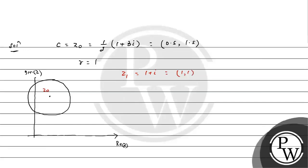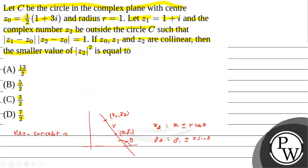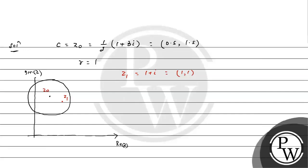And it is said that there is a third point z2 which is outside the circle. z1 and z2, all three are collinear, meaning they lie on a line. So z2 can either be here or here; both cases are possible. We have to think about both cases. If they are collinear, then there is a line making an angle theta with the real axis.